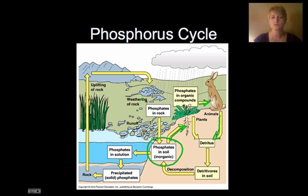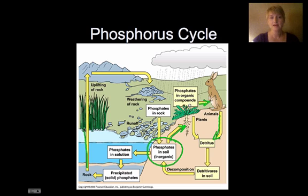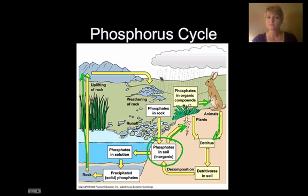Animals decay and excrete, putting some phosphorus back into the soil. We also have phosphates that are in water, and that can go back up into the rocks. So phosphate cycles around — it's a slower cycle because it depends on the weathering of rock.